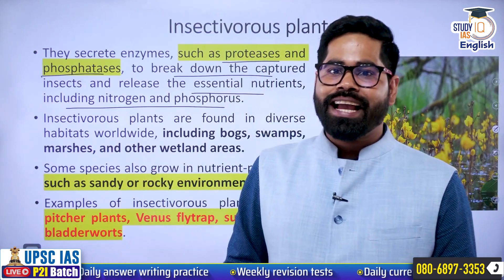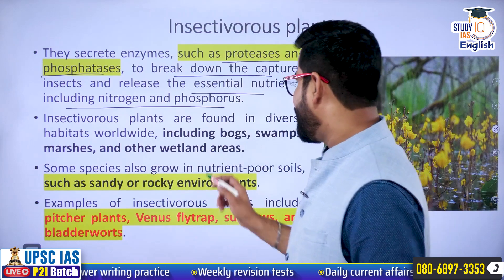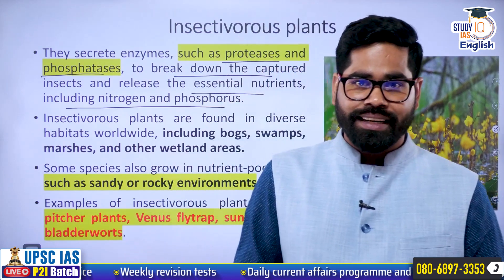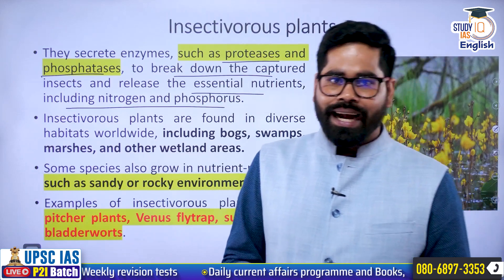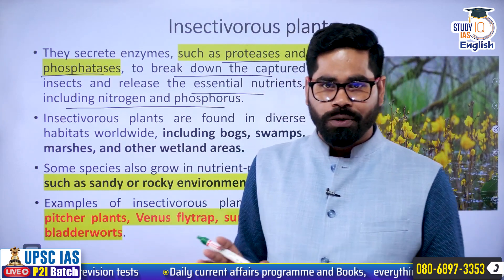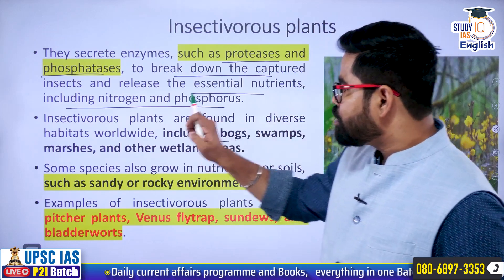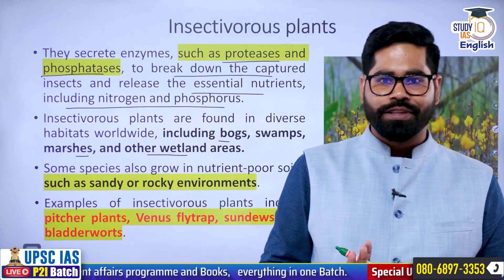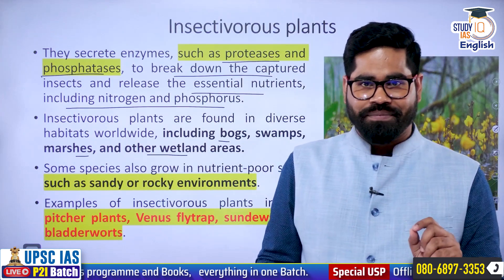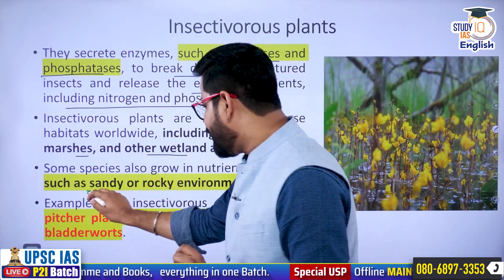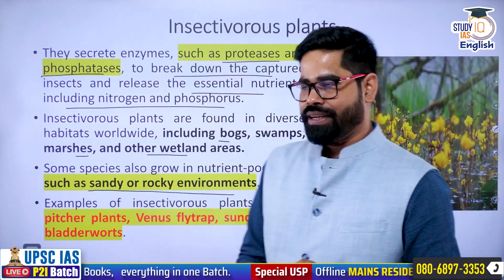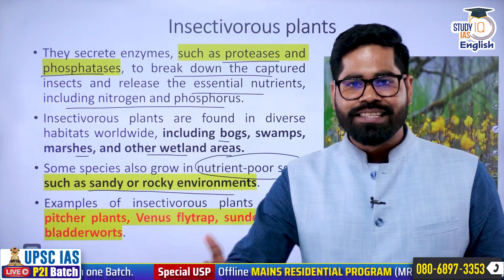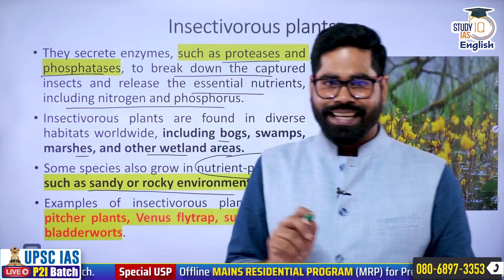That is why they have become carnivorous. Now, where are they found? Normally they are found across the world and they can be found in bogs, swamps, marshes, and wetland areas. At the same time, they can also be found in sandy or rocky environments. The areas where there is nutrient-poor soil — in those areas these carnivorous plants can exist.